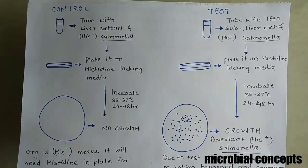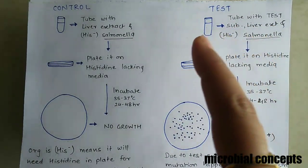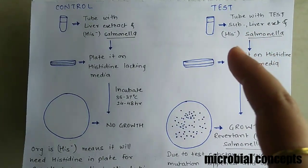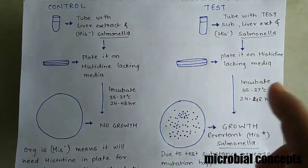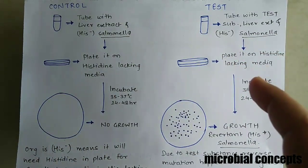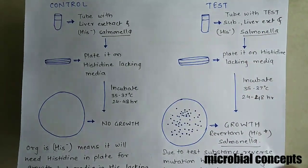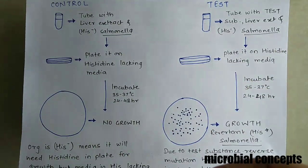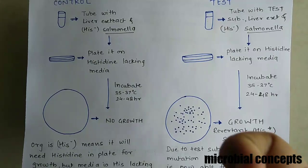Now let's see the test. In a tube, we have the substance under test along with liver extract and Salmonella which is histidine-deficient. Let it react in the tube, and after some time, plate it on a histidine-lacking medium, just as we did for the control. If the test substance has any mutagenic potential, we will be able to see it in our results.